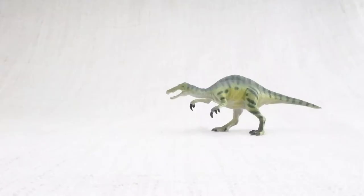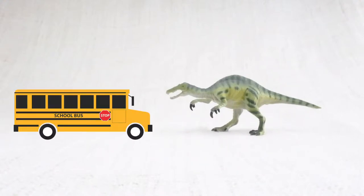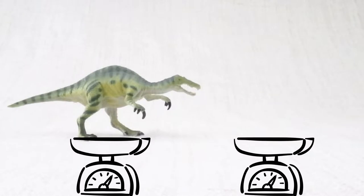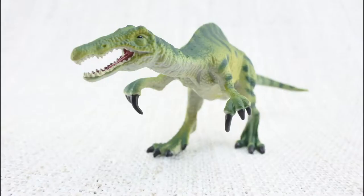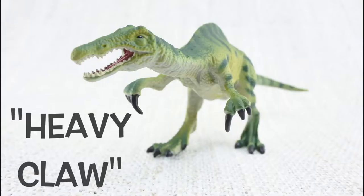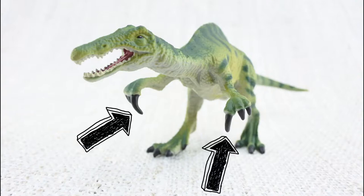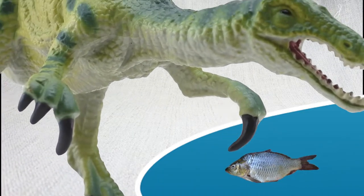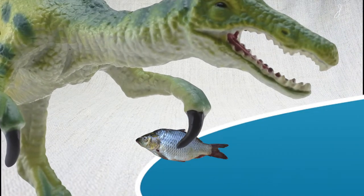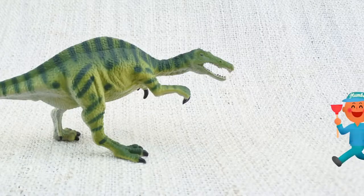So what have we learned? We learned Baryonyx grew to be longer than a bus and weighed as much as a rhino. Baryonyx means heavy claw because it has one large claw on each hand. It was the first dinosaur discovered that ate fish and it was discovered by a plumber.